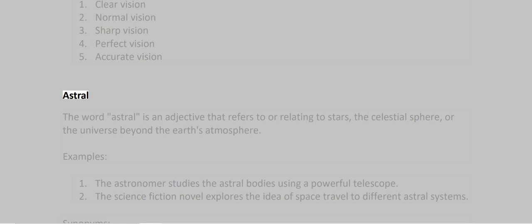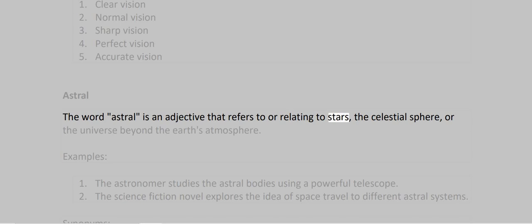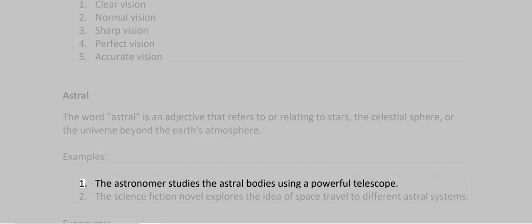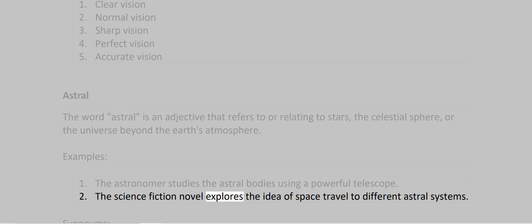Astral. The word astral is an adjective that refers to or relating to stars, the celestial sphere, or the universe beyond the Earth's atmosphere. Examples: 1. The astronomer studies the astral bodies using a powerful telescope. 2. The science fiction novel explores the idea of space travel to different astral systems.